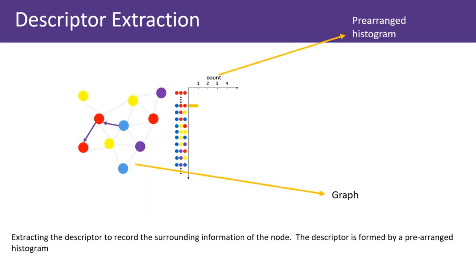To describe each node in the graph, we extract the descriptor to record the surrounding information of the node. For each node, the descriptor stores all possible paths that start from it. The length of the path is set to 3. For a single descriptor, all possible paths are counted in the form of a prearranged histogram.